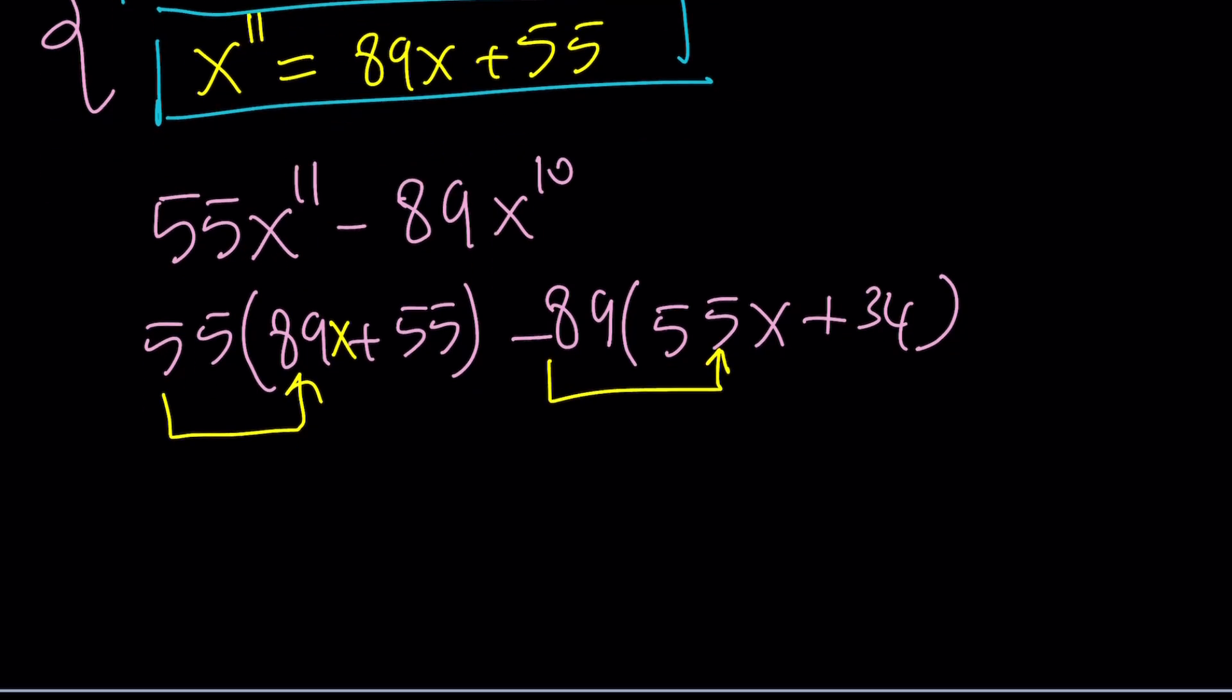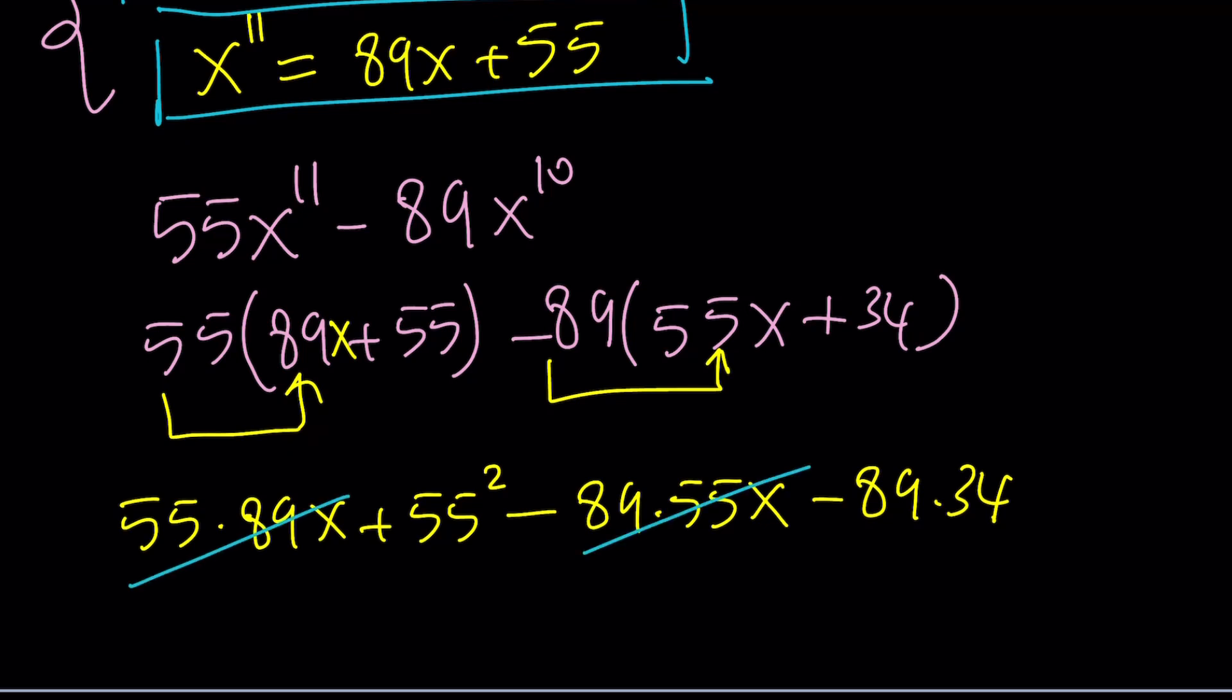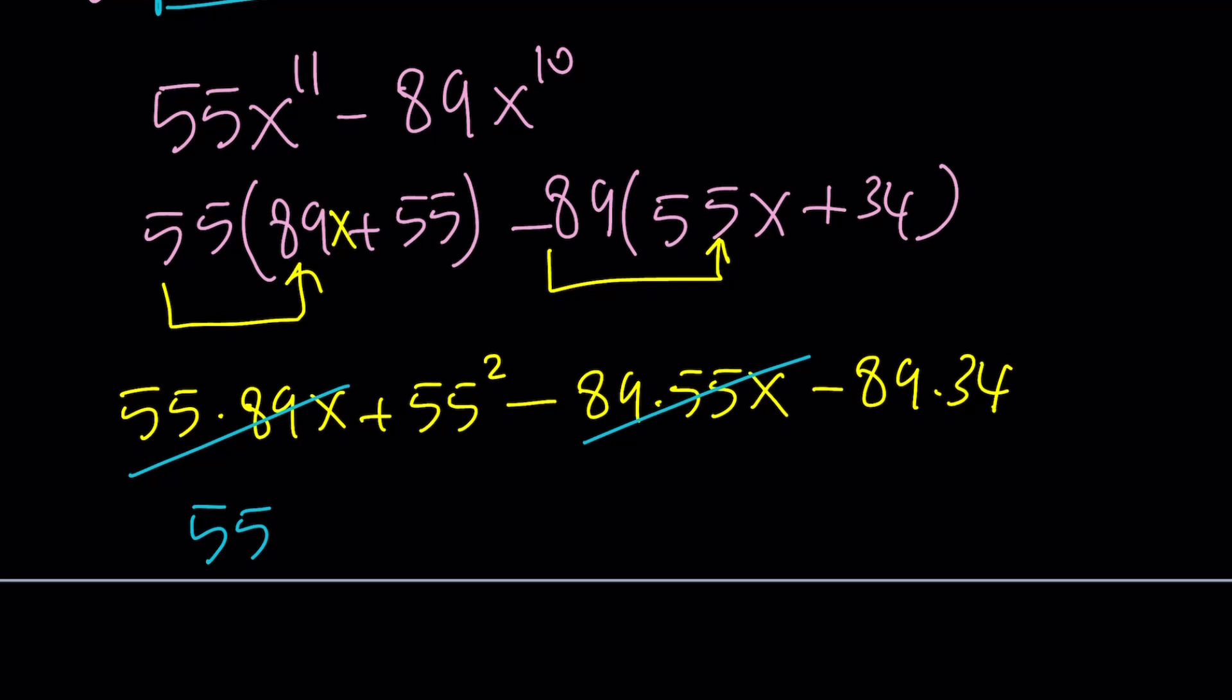55 times 89x plus 55 minus 89 times 55x, notice that, minus 89 times 34. Now, what is that going to equal? Well, these two terms are going to cancel out, leaving us with something simpler, at least something numerical. And this is actually going to equal 1.